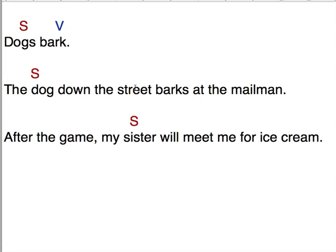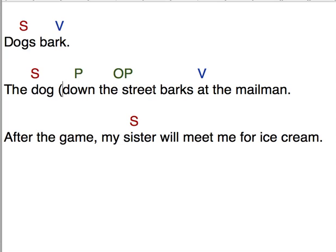The dog down the street barks at the mailman. What is this dog doing? It's barking. So V is the verb. Notice also in this sentence, what else do we have here? Dog down the street. Down is a preposition. The street is the object of that preposition. And so here's a prepositional phrase.